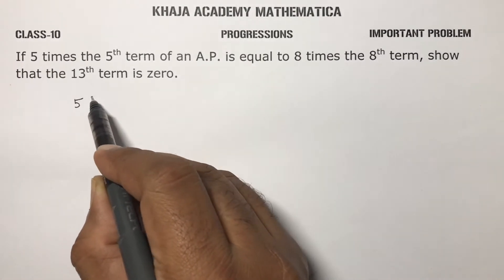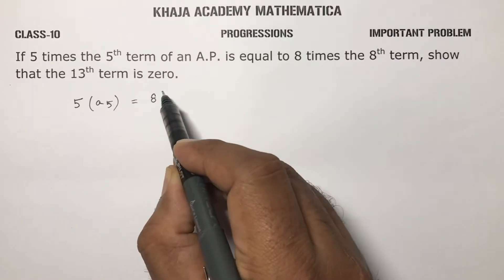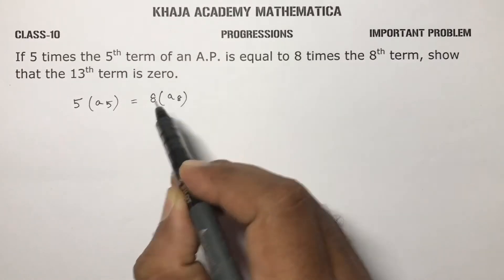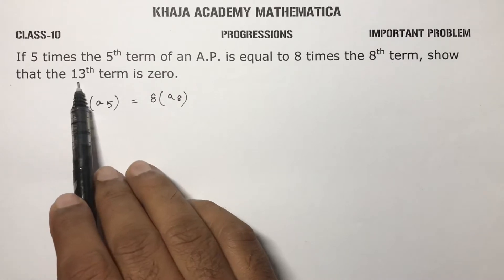5 times the fifth term equals 8 times the eighth term. When the question is like 5 times the fifth term and 8 times the eighth term, then 5 plus 8, the 13th term will be 0.